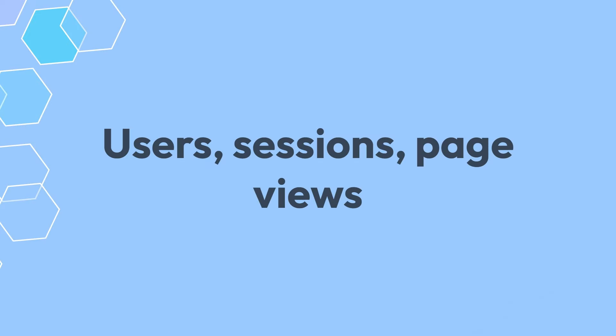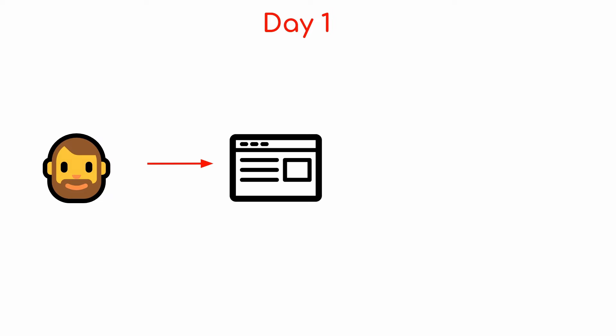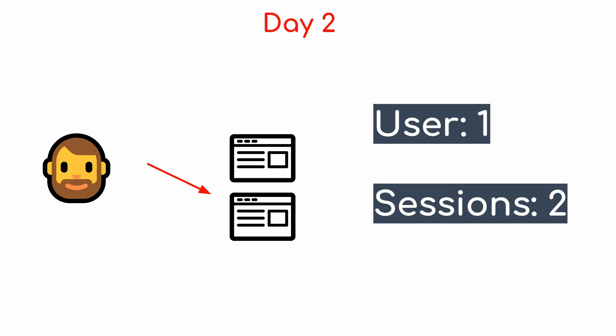Let's start with users, sessions, and page views because those appear everywhere and they're kind of linked together. Let's say it's day one and you come to a website. You visit that website, do your things, and leave. That means in your analytics you'll be counted as one user and one session. Then the next day you come to the same website again — your web analytics would say you're still one user, but you had two sessions.